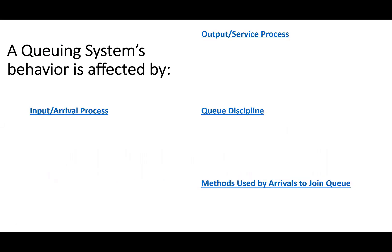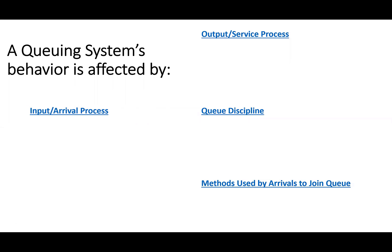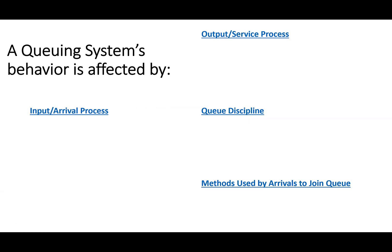Any queuing system's behavior — meaning how long the line gets or how long people wait — is affected by these things: input or arrival process, output or service process, queue discipline, and methods used by arrivals to join queues. Whenever I say arrival, I mean customers, jobs, emails, maintenance requests, airplanes — anything that enters and waits in line; that's an arrival.